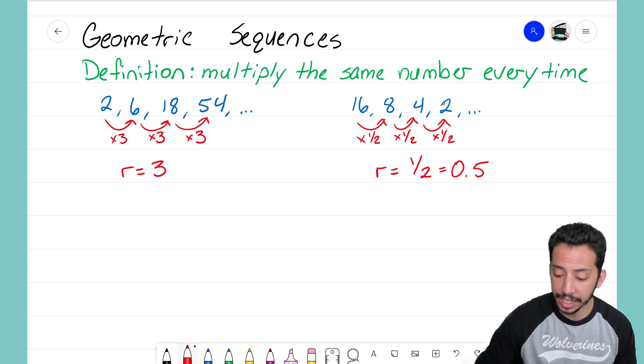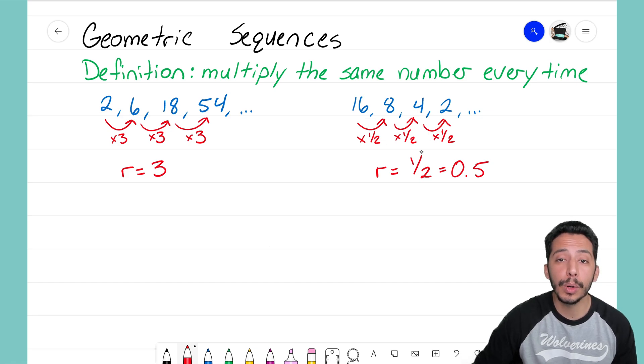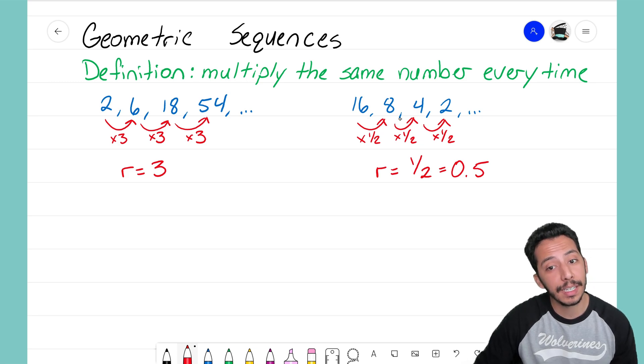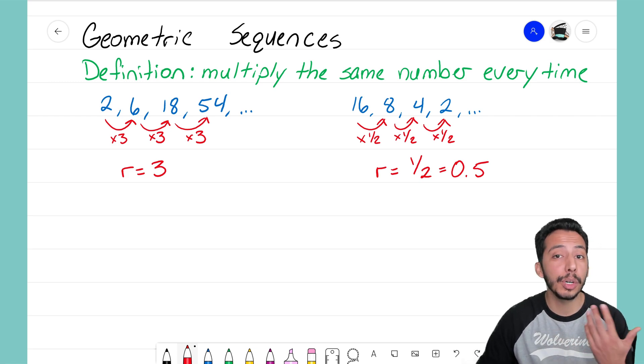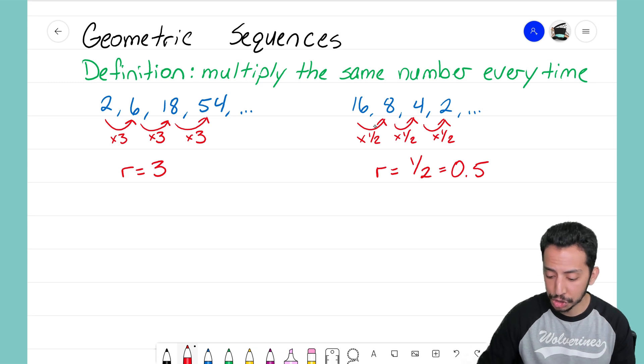The big thing we focused on in the previous video is making sure we're thinking in terms of what are we multiplying by, not what are we dividing by. It's very easy to look at this sequence and think we're dividing by 2: 16 divided by 2 gives 8, 8 divided by 2 gives 4, so the common ratio must be 2.